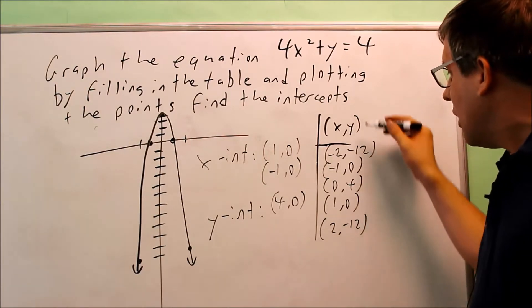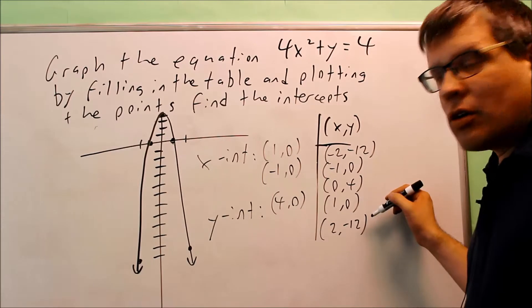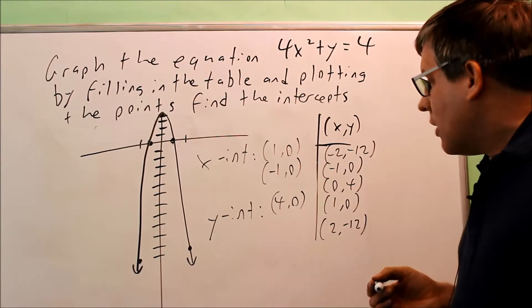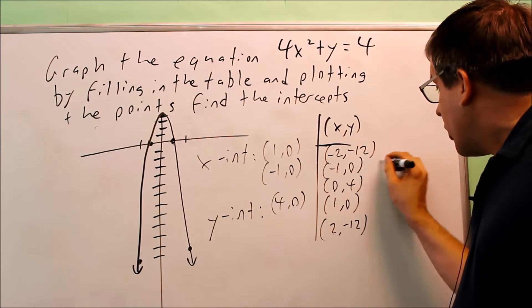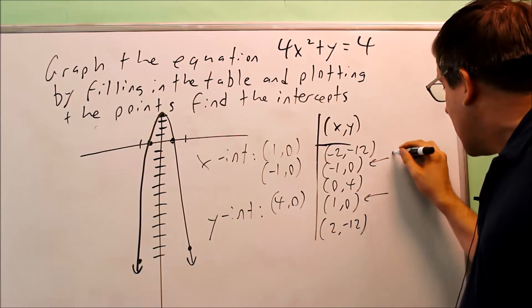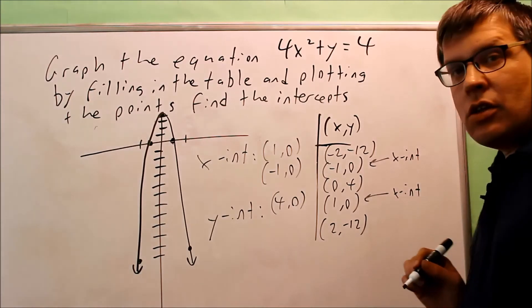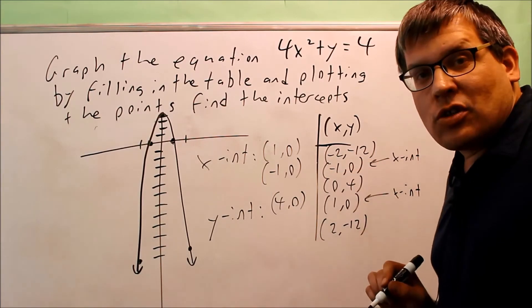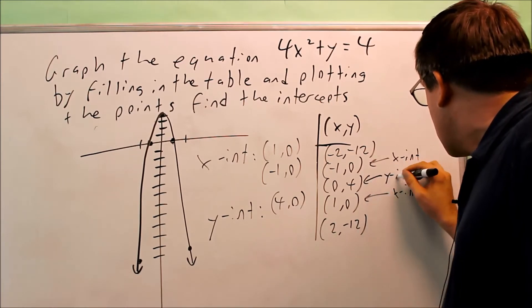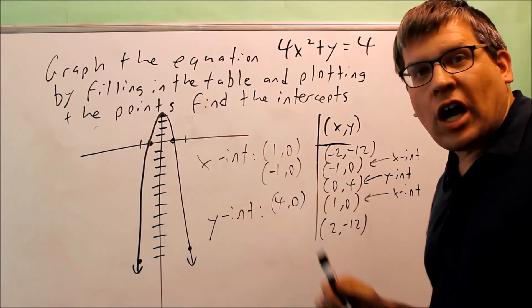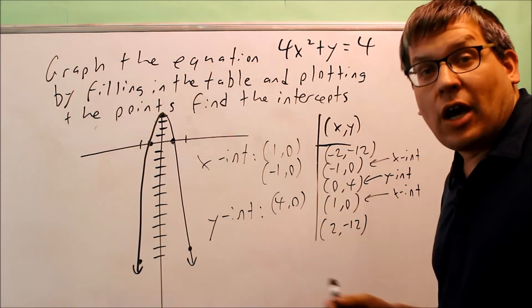You could also identify the intercepts from your list of values by knowing that whenever you have x-intercepts, the y values are always 0. You can point those out right from your table — those are both going to be x-intercepts. And if you have a 0 in the x position, that means you have a y-intercept, and that's right here. So you can do it one of two ways: use the graph, or look at your set of points.